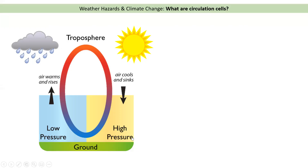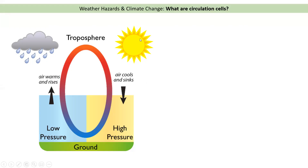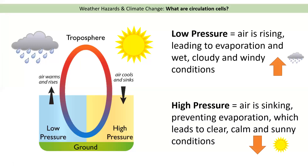The opposite is high pressure. High pressure is when the air is quite heavy — you can't feel that on your body, but it is heavier on those days, and that high pressure is sinking. What that means is that any water on the surface of the earth cannot evaporate, so we get nice, sunny, clear conditions. To recap: low pressure means air is rising, leading to evaporation and wet, cloudy, windy conditions. High pressure means air is sinking, stopping evaporation, leading to clear, calm, and sunny conditions.